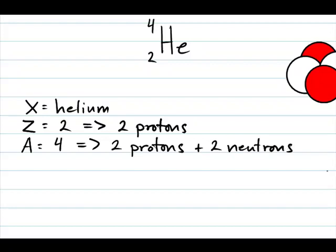So 2 protons plus 2 neutrons equals an atomic number of 4. That's very important to know.